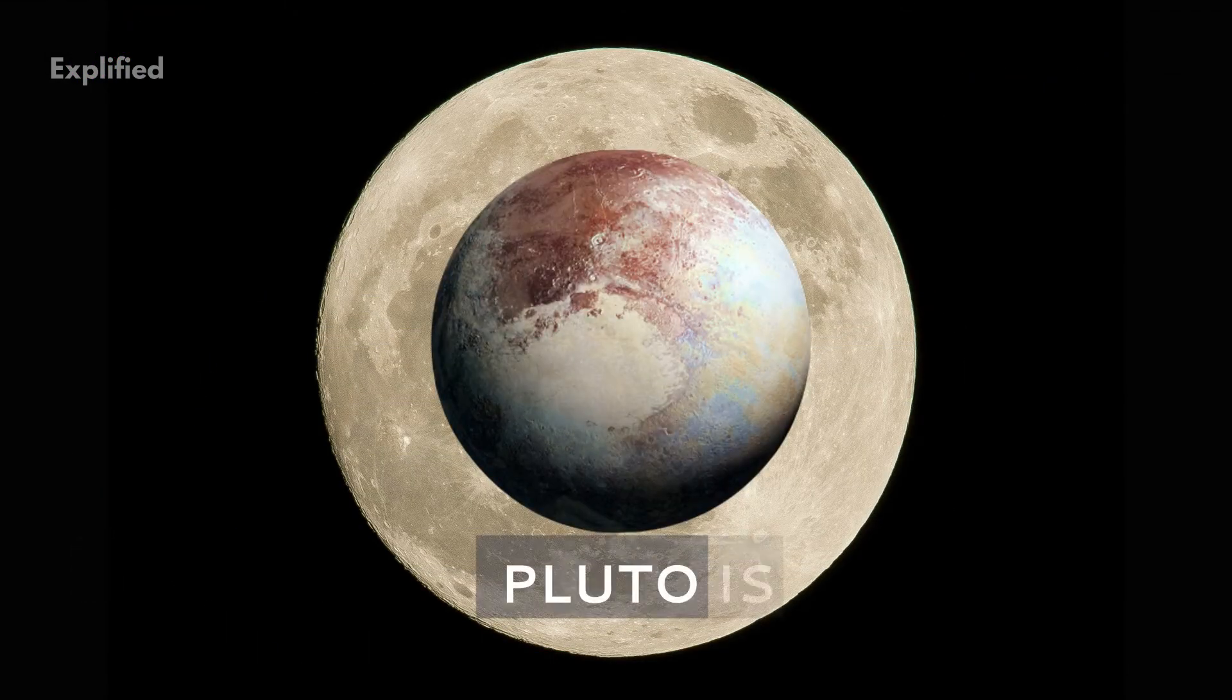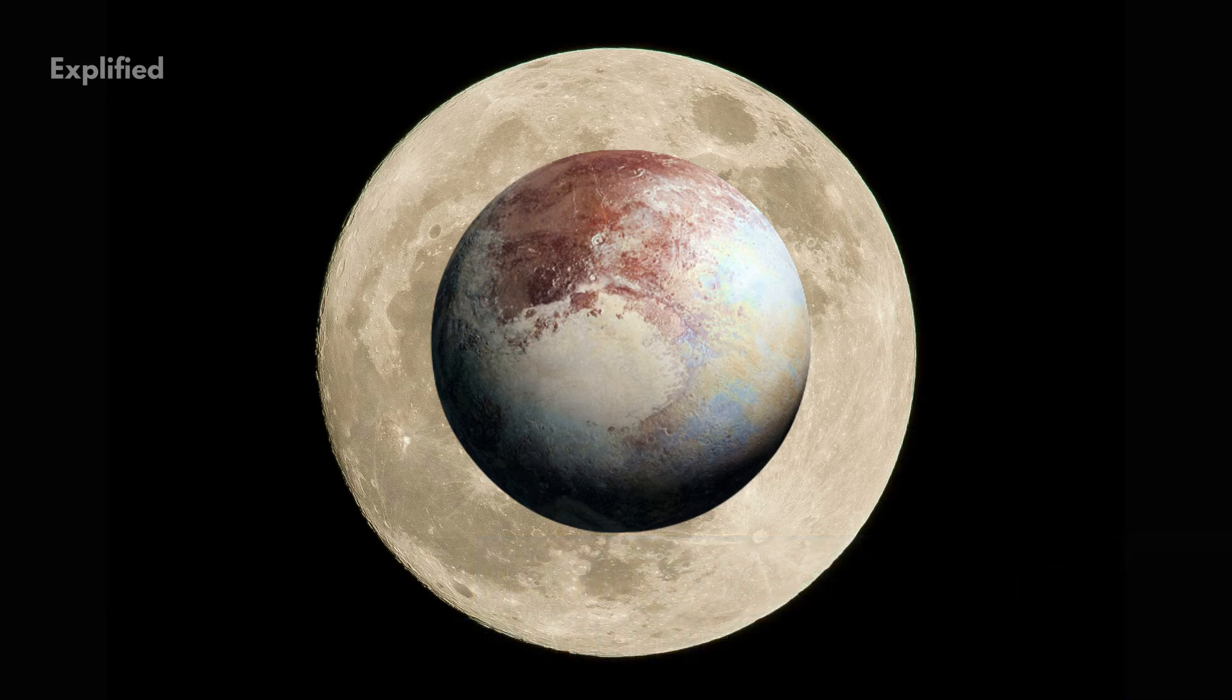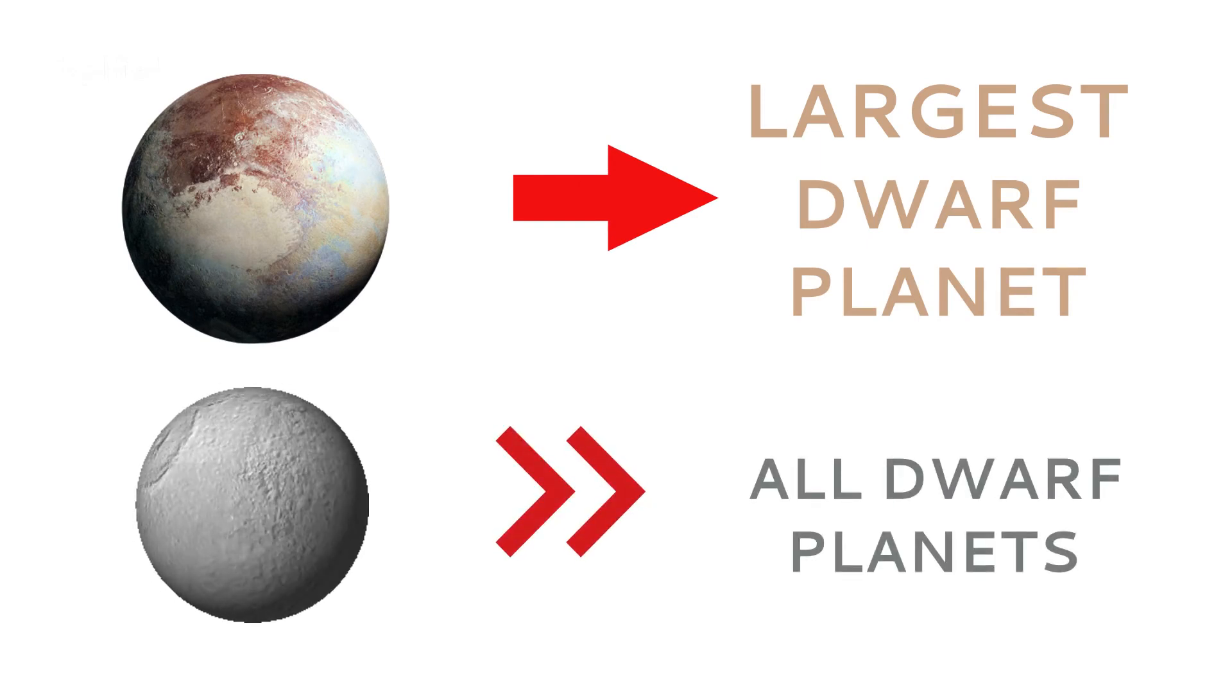Number 8. Pluto is smaller than many moons of the solar system, including our Earth's moon. Now, Pluto is the largest dwarf planet. So this means that all dwarf planets are smaller than our Earth's moon. Quite fascinating right?